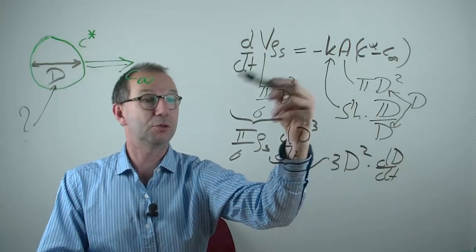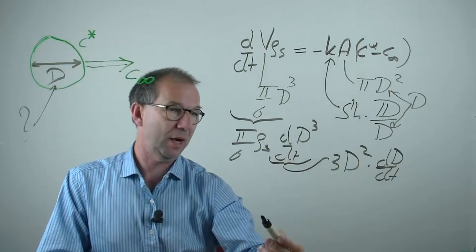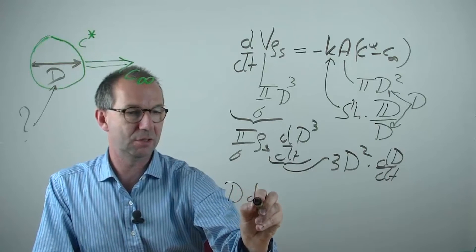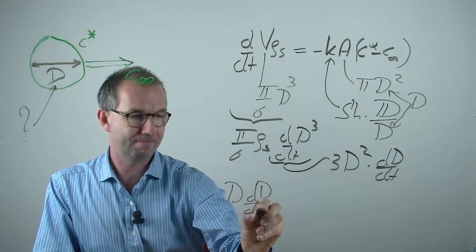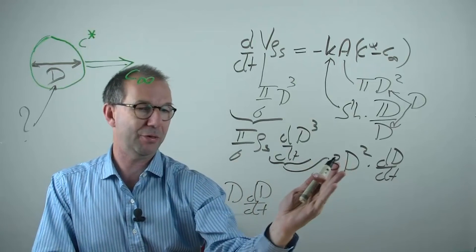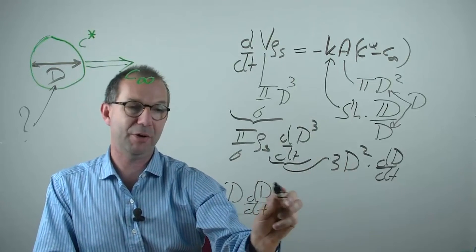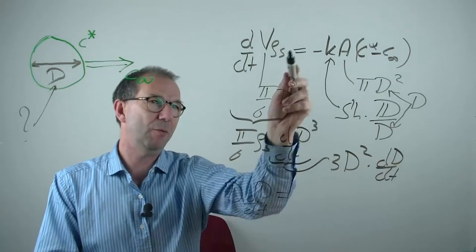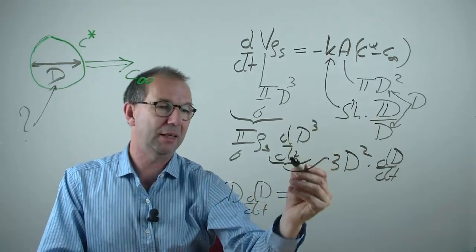If I move that over to the left hand side, this square disappears. So I get here dD/dt. Everything that contains D is on this side. Everything that doesn't contain D should be on the other side. That's quite a bit. Let's see whether we can pick that up from all the scribbling that I did.